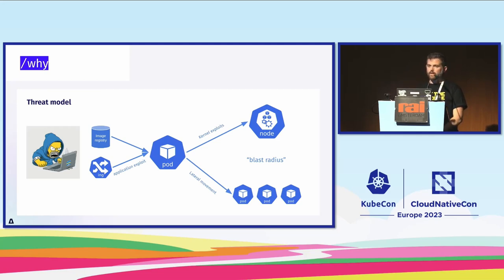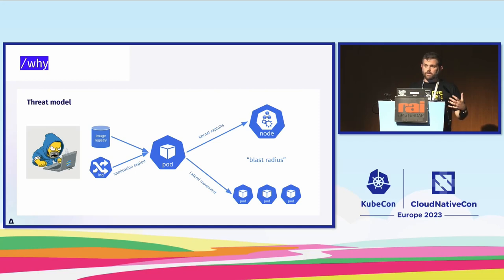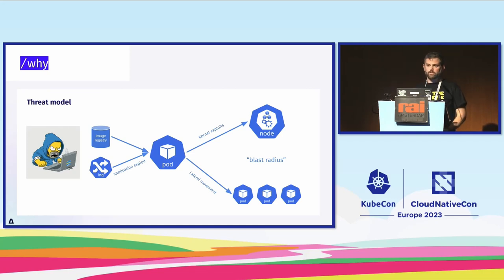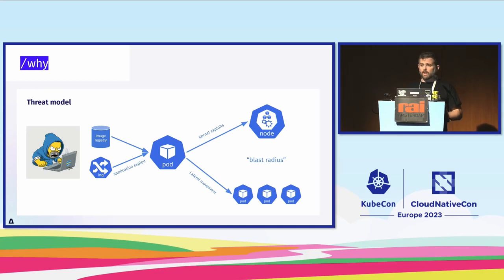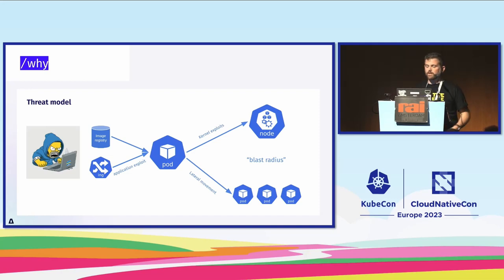If an attacker penetrates your workload and has code execution within the confinement of your pod, they have two directions for lateral movement. They can target the kernel to escape the container confinement — we call those kernel exploits. If an attacker escapes a Kubernetes node, they can mostly take over your cluster, because every Kubernetes node has its node secret — usually just files on the filesystem — allowing the attacker to impersonate a node and communicate with the kube-apiserver.